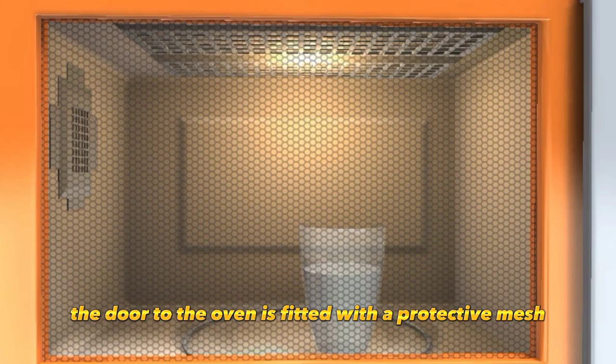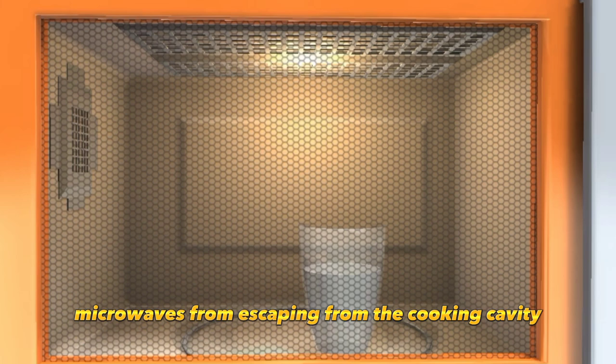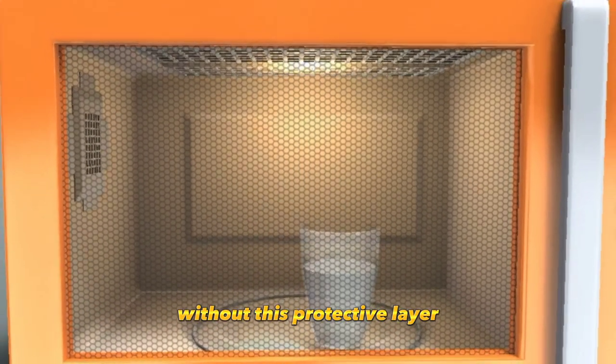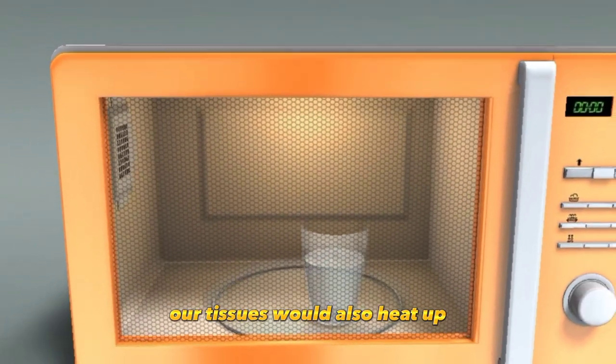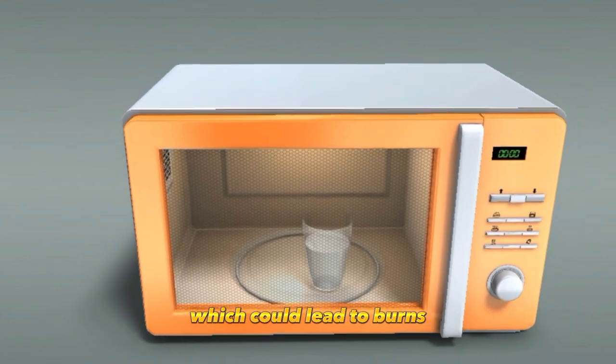The door to the oven is fitted with a protective mesh, which prevents microwaves from escaping from the cooking cavity. Without this protective layer, our tissues would also heat up while standing near the oven, which could lead to burns.